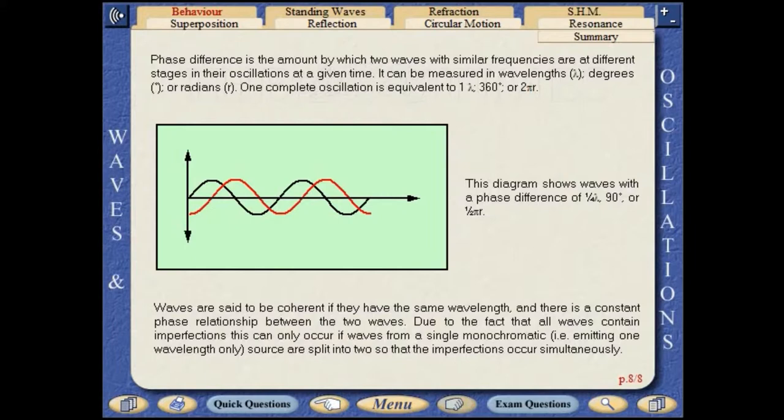Waves are said to be coherent if they have the same wavelength and there is a constant phase relationship between the two waves. Due to the fact that all waves contain imperfections, this can only occur if waves from a single monochromatic source are split into two, so that the imperfections occur simultaneously.